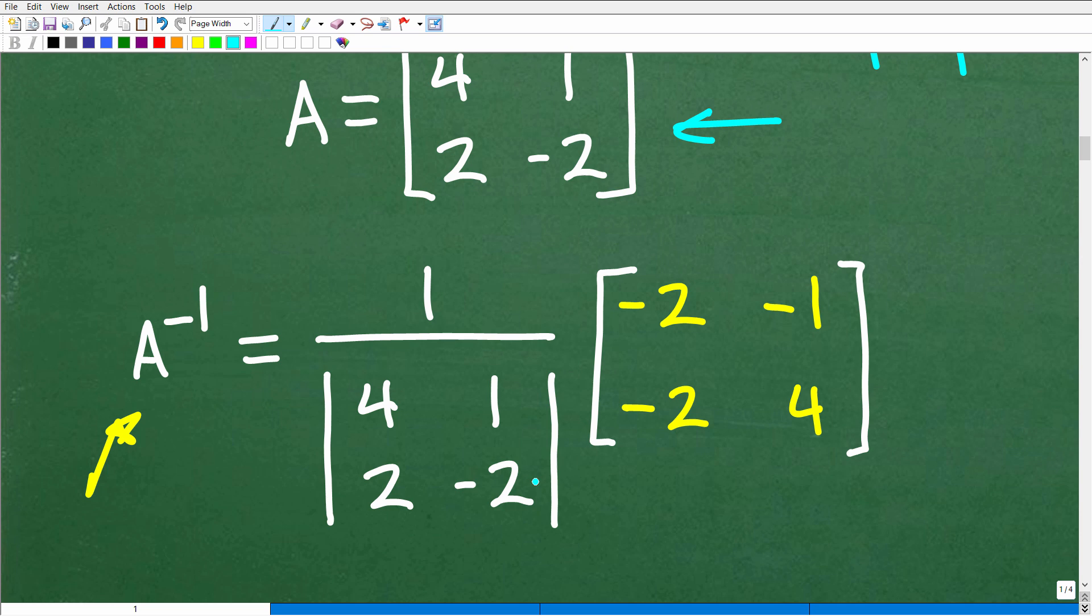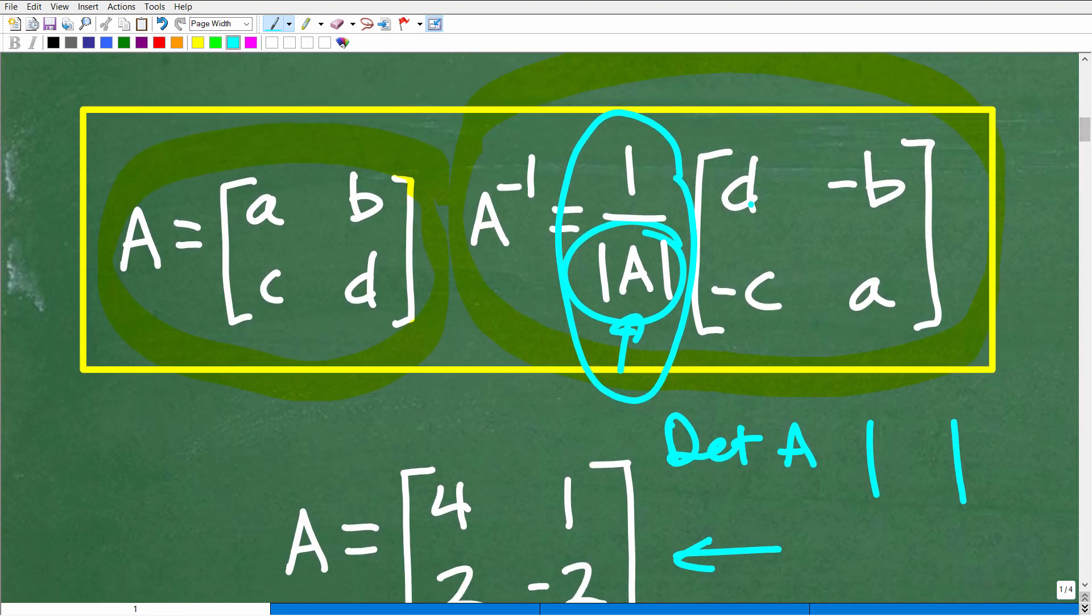So, we have 1 over the determinant of 4, 1, 2, negative 2. So, that's this 1 over the determinant of A, and that's going to be multiplied by this right here: D, negative B, negative C, negative A.